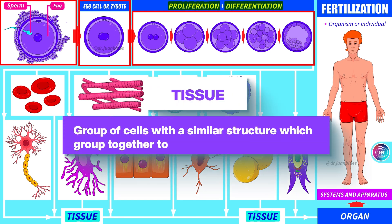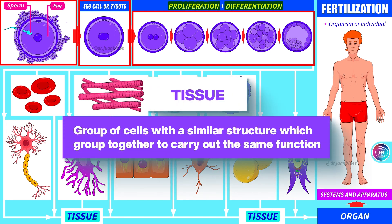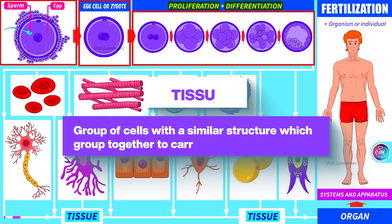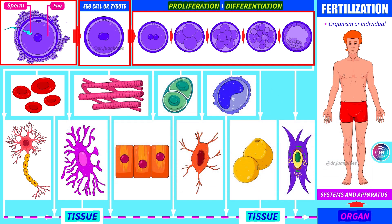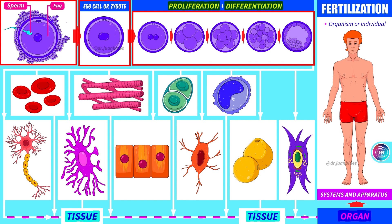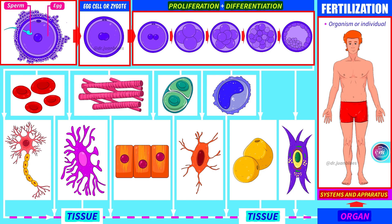So, tissue is a group of cells with a similar structure which group themselves together to perform the same function. And this group of cells is called tissue. In turn, the different tissues will group together to form organs. And when different organs group together to perform the same function, we're talking about systems. To make things clear, here's an example.